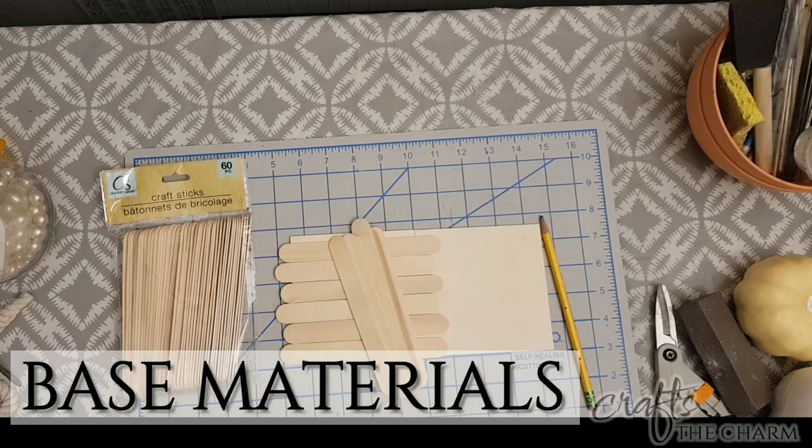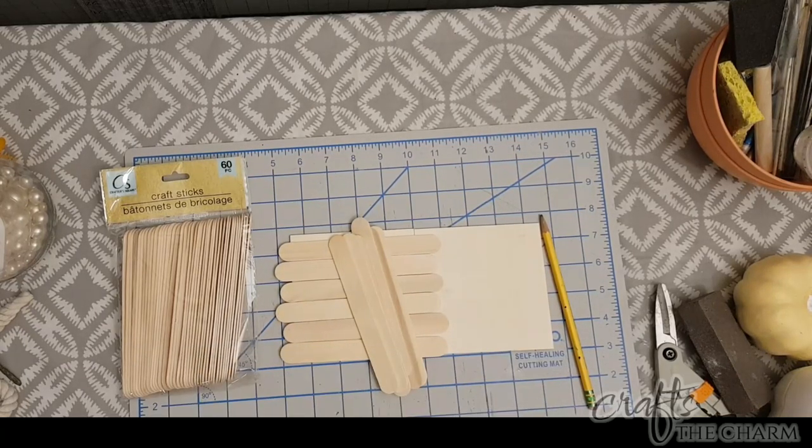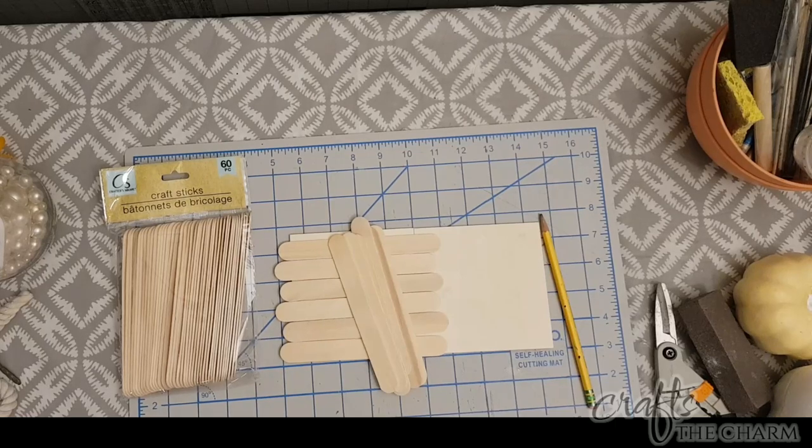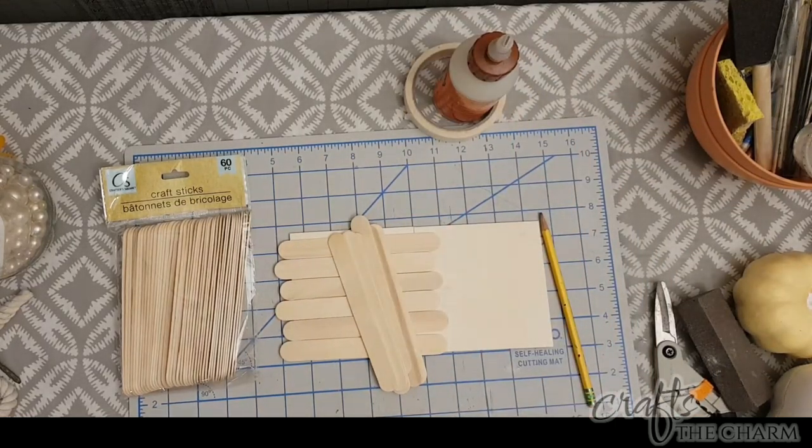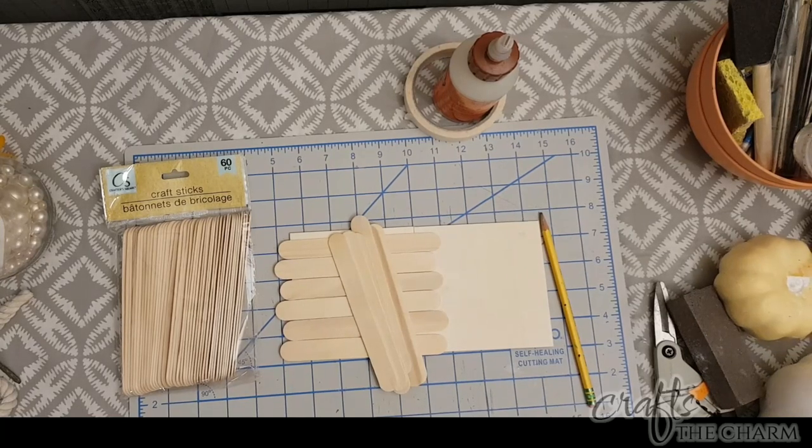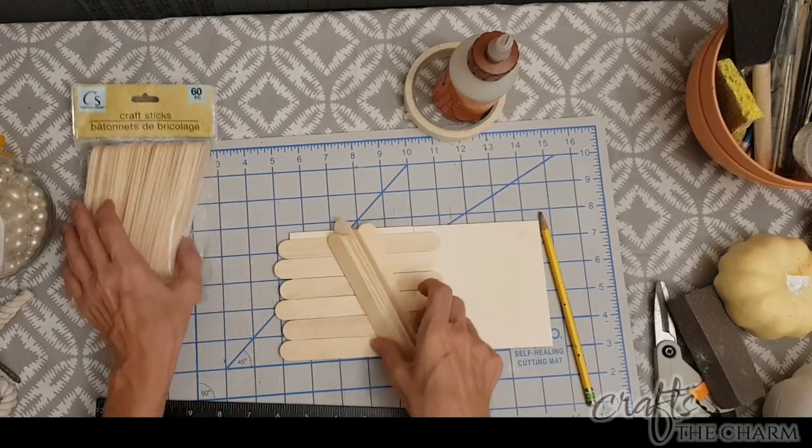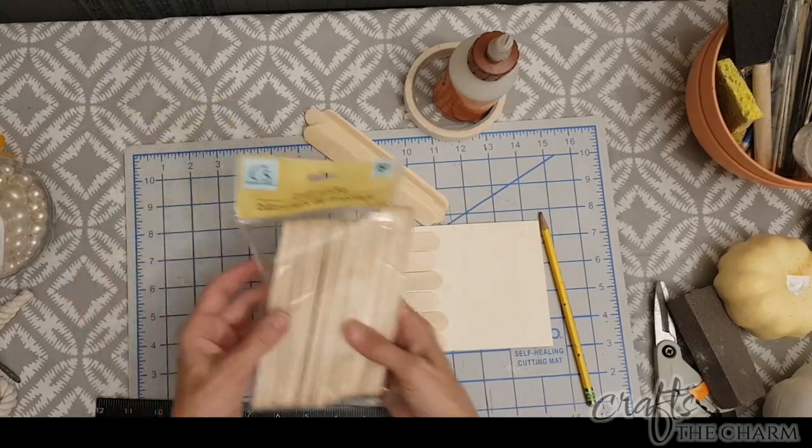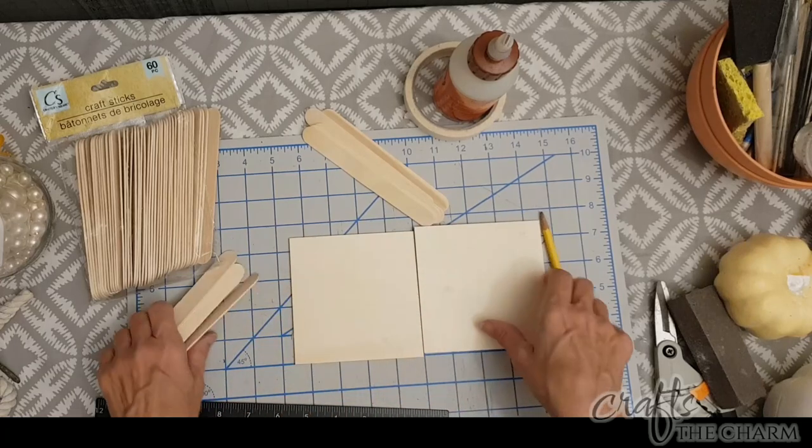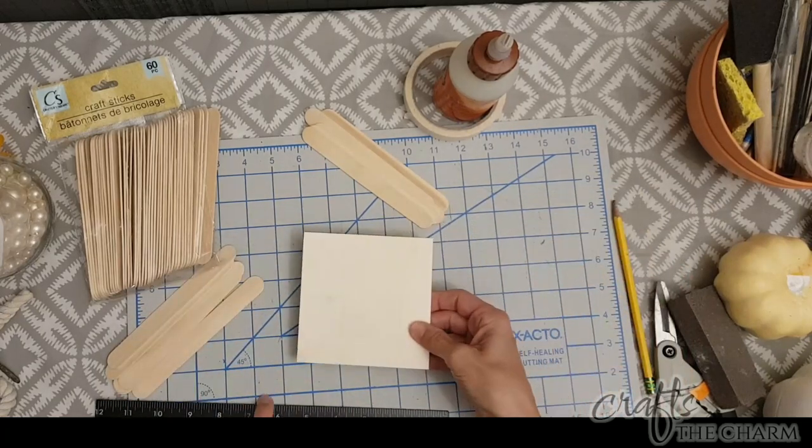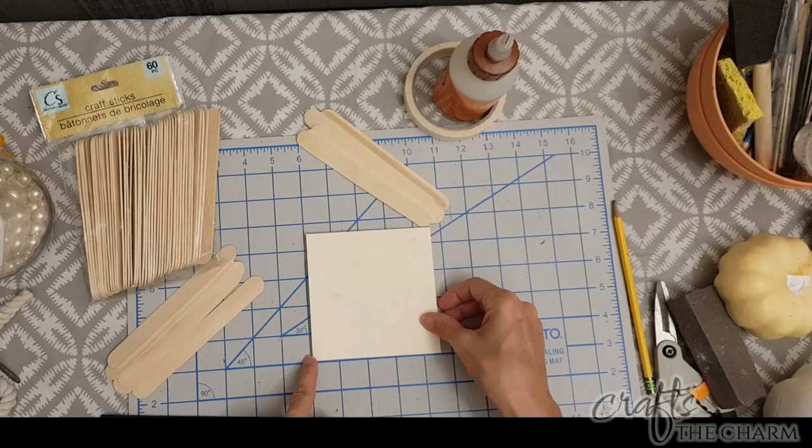Now I want to make some sort of base and then I'm going to put the pumpkin on top of the base or the entire topiary on top of the base. And what I'm using here are some of the larger craft sticks. I'm going to use some bamboo skewers and I'm going to use these squares and they're about four and a half inches square and they come in a pack of I want to say six at the Dollar Tree.